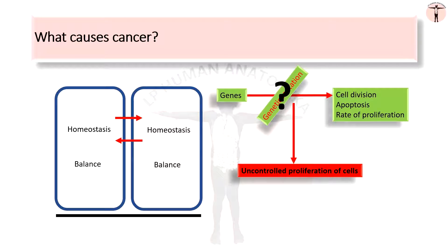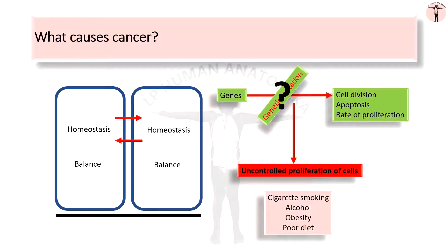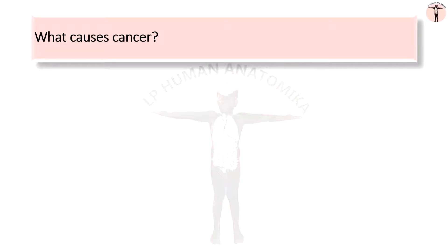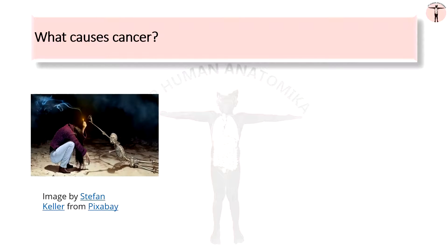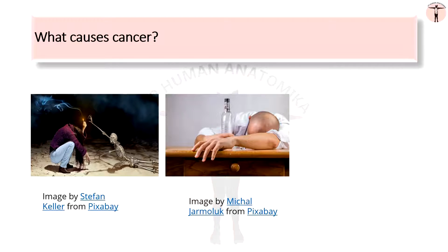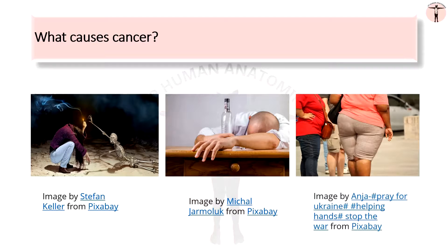What are the causes of genetic mutations? Genetic mutations can occur due to factors like cigarette smoking, alcohol, obesity, and poor diet. Smoking is the biggest cause of cancer deaths, followed by addiction to alcohol, obesity, and poor diet.